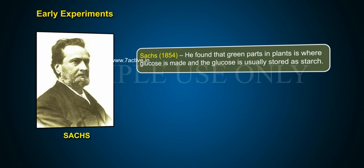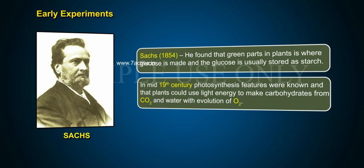Sachs, 1854: He found that the green parts of plants are where glucose is made, and the glucose is usually stored as starch. By the mid-19th century, it was known that plants could use light energy to make carbohydrates from CO2 and water with evolution of O2.